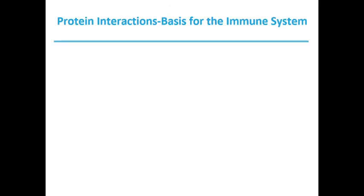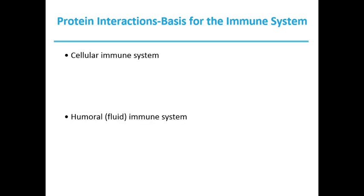Our immune system involves an intricate and coordinated set of interactions that happen between many different classes of proteins, molecules, and various cell types. Our immunity is brought about by a variety of white blood cells, including macrophages and lymphocytes. The immune response consists of two complementary systems: the cellular immune system and the humoral immune system.